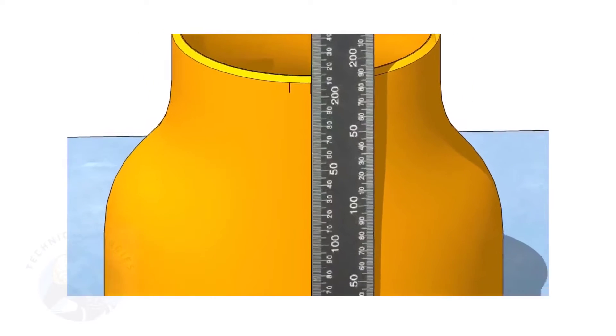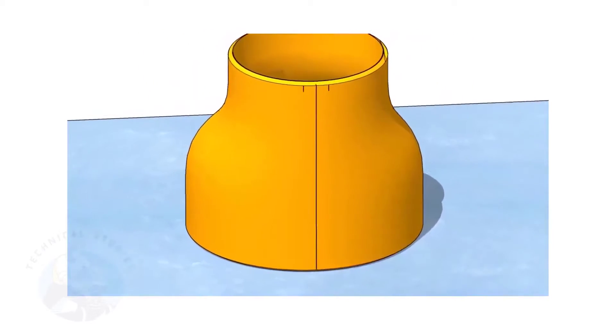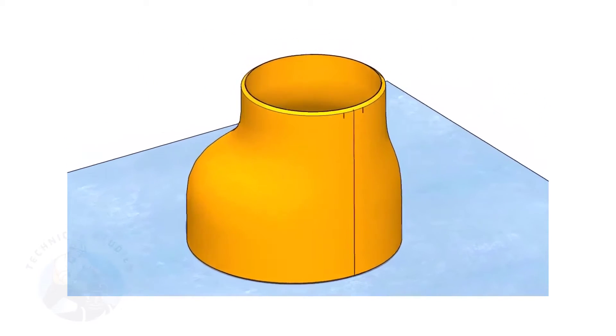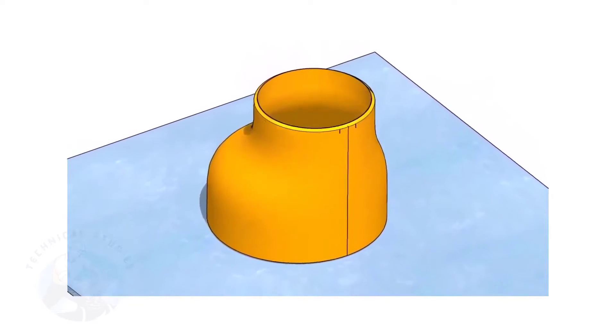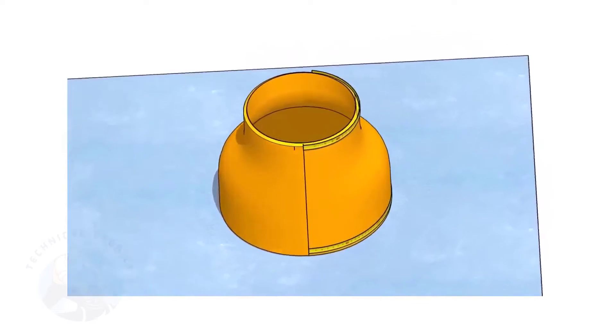In this video, I will show you the method of fitting an eccentric reducer to a pipe that is already fitted to a flange. But this method is applicable for all the fittings.